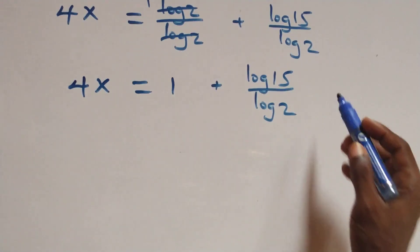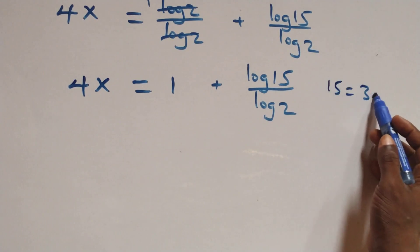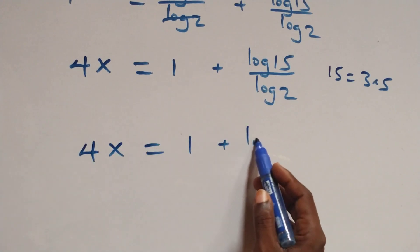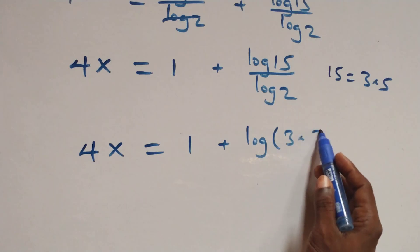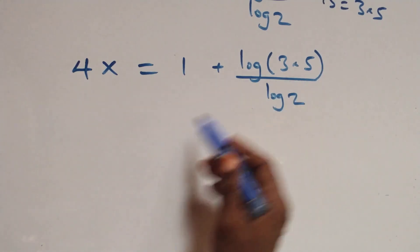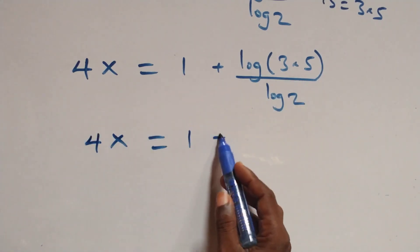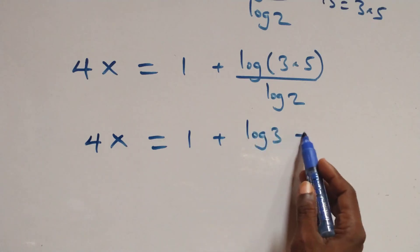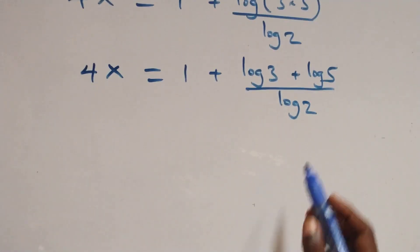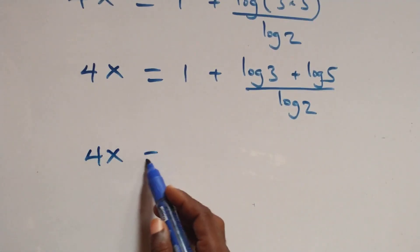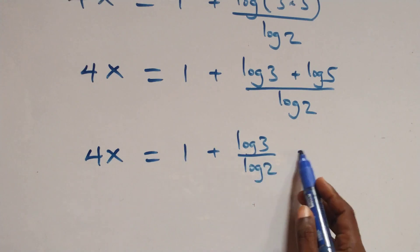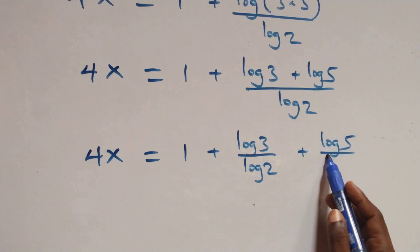From here we can rewrite 15 as 3 times 5. What we have becomes 4x equals to log of 3 times 5 over log 2. This also follows the log product rule, giving 4x equals to log 3 over log 2 plus log 5 over log 2. We separate this into two fractions: 4x equals to 1 plus log 3 over log 2 plus log 5 over log 2.